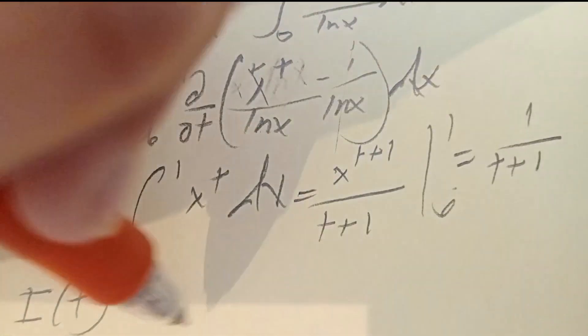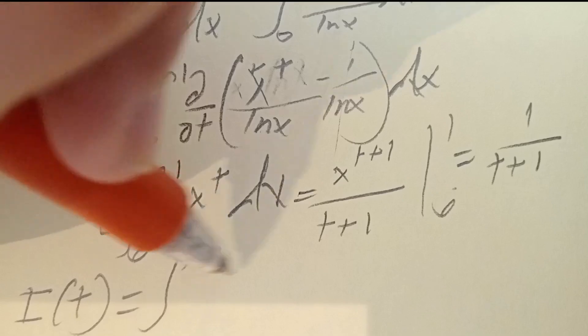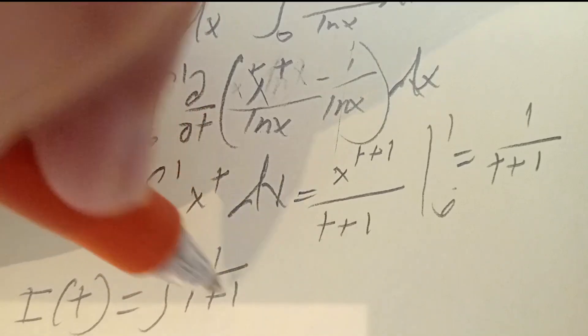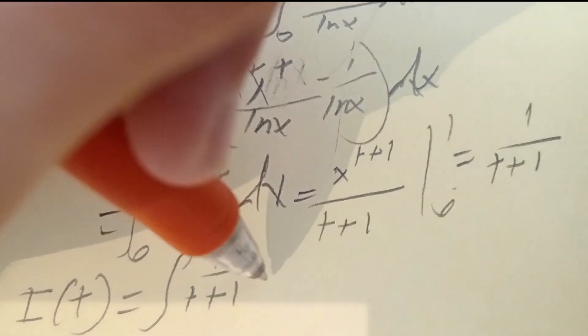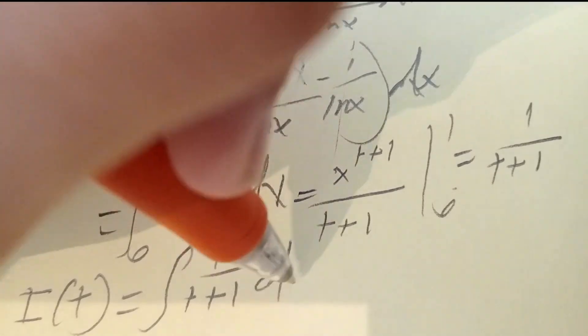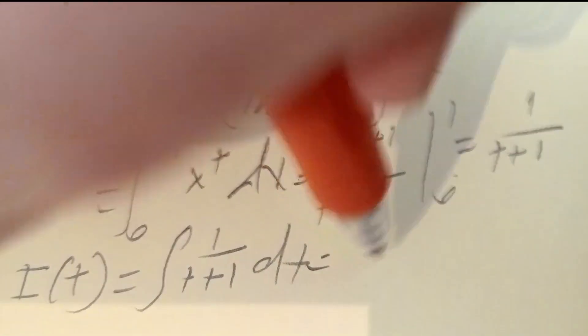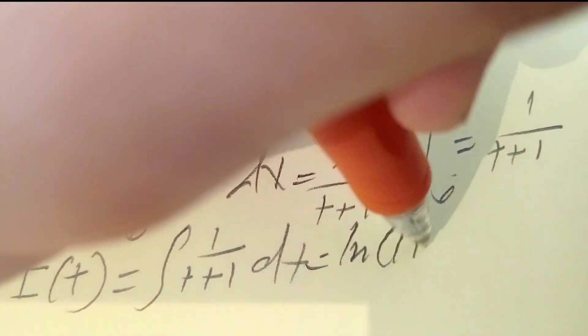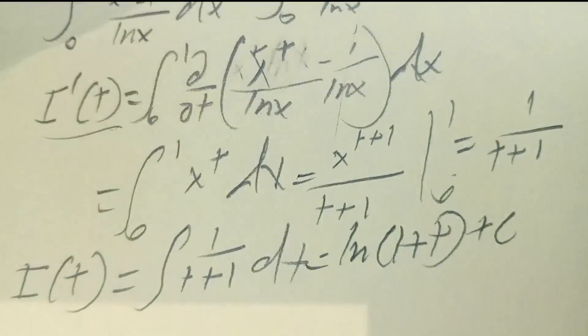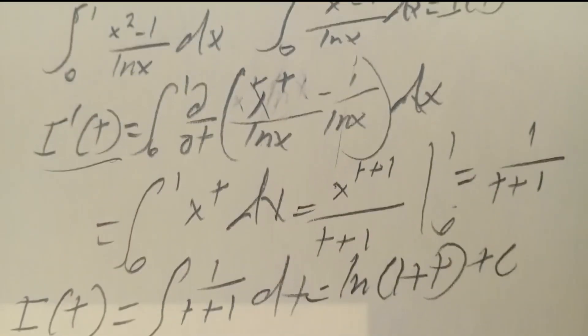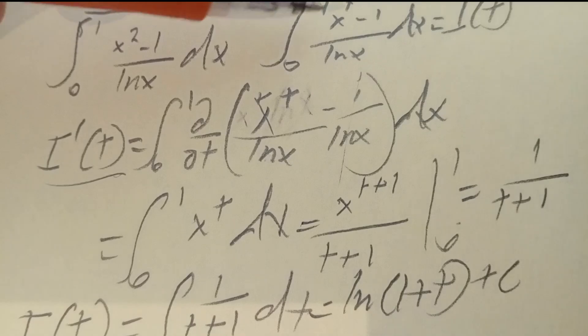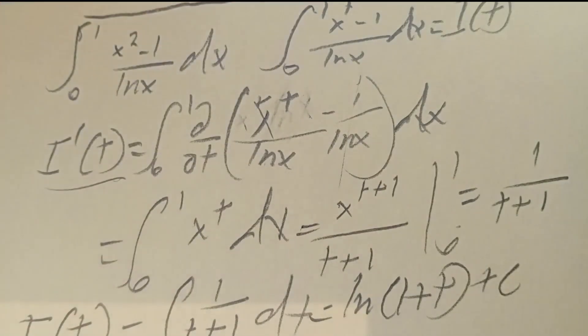This is I'(t) only, and we are looking for I(t), so we integrate it. I(t) is the integral of 1 over (1+t) dt, which equals ln of (1+t) plus C. To find C, we plug in t = 0.